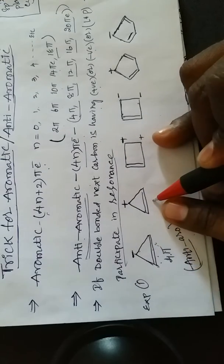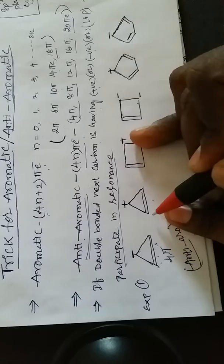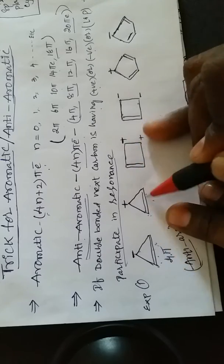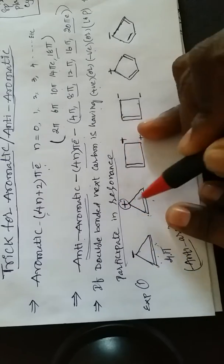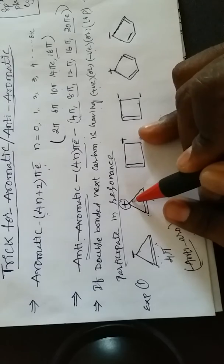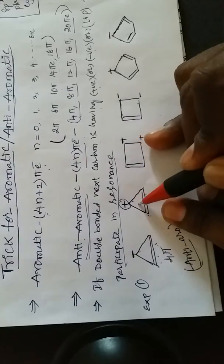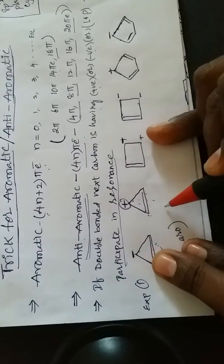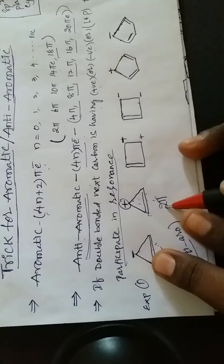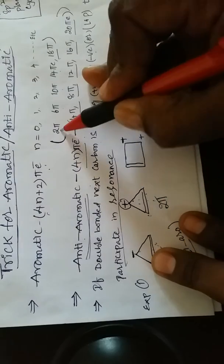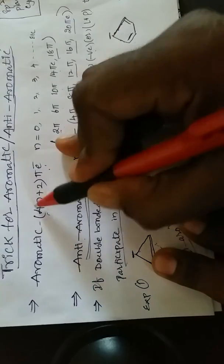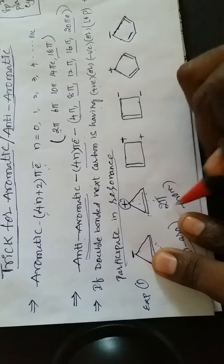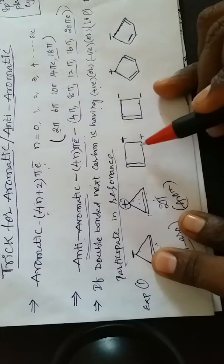In the second example, there is a double bond, and the next carbon has a positive charge, which also participates in resonance. Here the total number of pi electrons is only two. Two pi electrons — this belongs to aromatic.